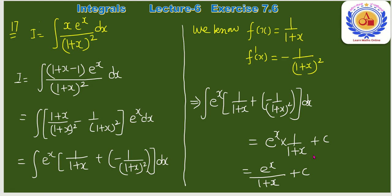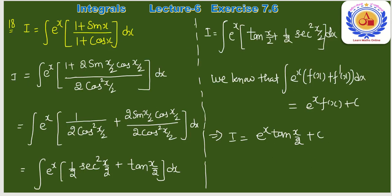Question number 18: ∫eˣ·(1 + sin x)/(1 + cos x) dx। 1 + sin x = 2 sin(x/2)·cos(x/2) और 1 + cos x = 2cos²(x/2) से substitute करते हैं।